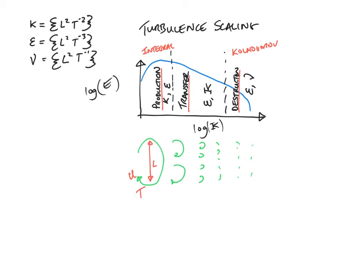And basically, to find the time and length scales at each end of the spectrum, we just combine these quantities in order to get the scales that we want, as follows. So to start with, we find the time scale at the integral scales. And since the integral scales is just a function of k and epsilon, and we can see very easily that the only difference between these two quantities is one time scale, we simply have to divide k by epsilon in order to get a quantity that has the dimensions of time.